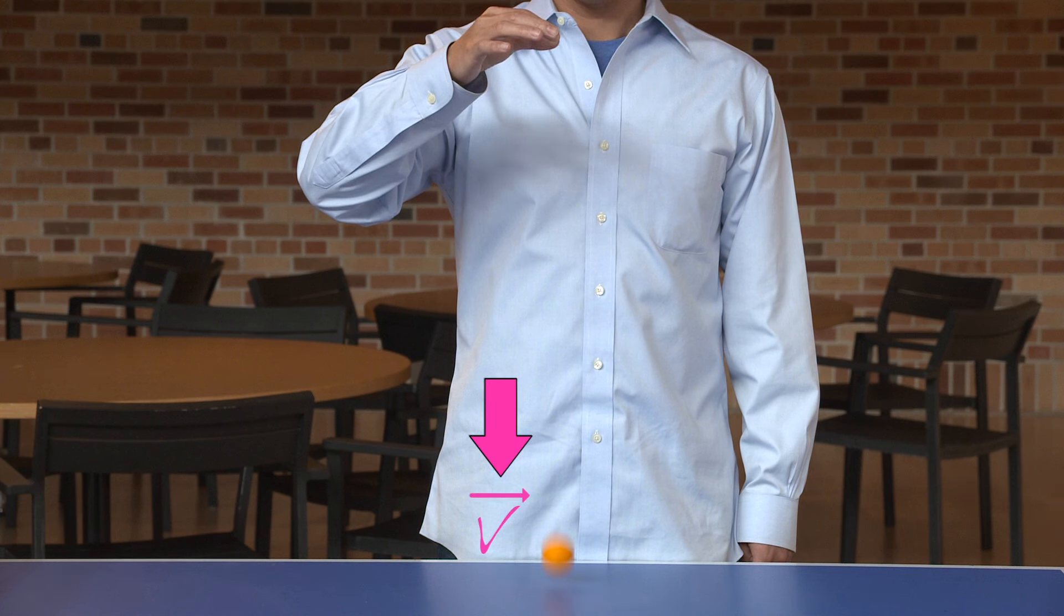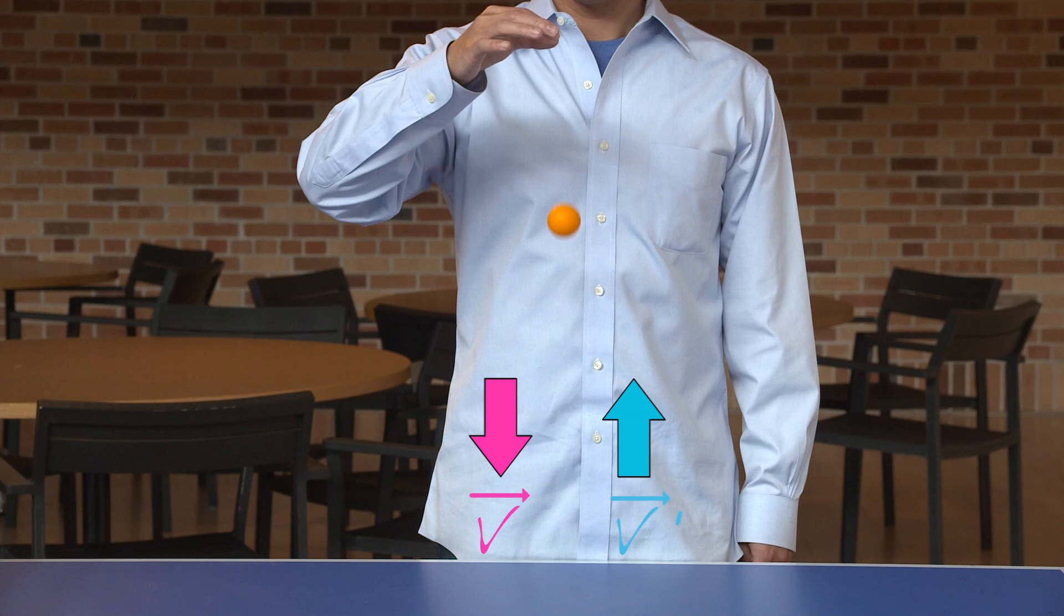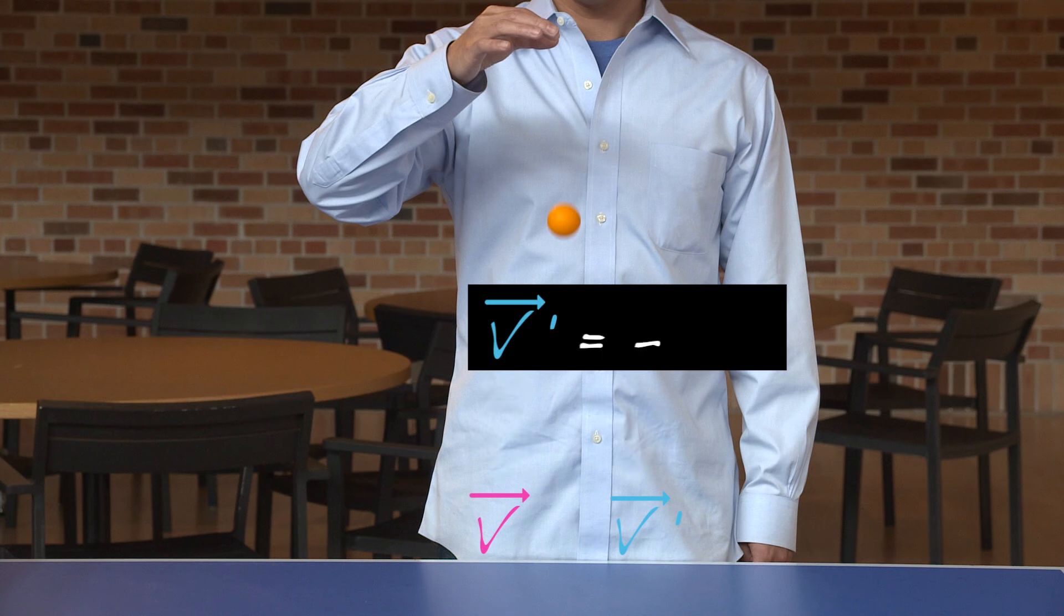So if v is the downward velocity before the collision with the floor, then the velocity, called v prime after the collision, is given by v prime equals negative e times v. Here e is the elasticity, a number between zero and one.